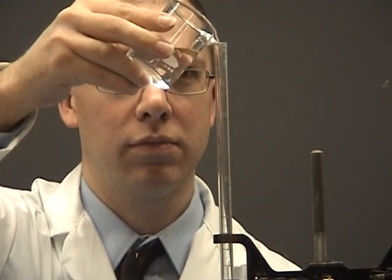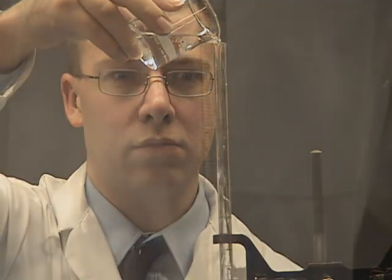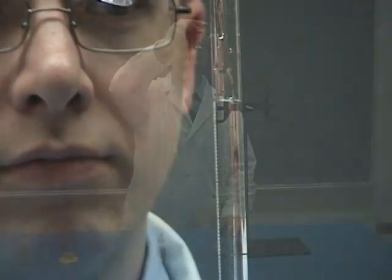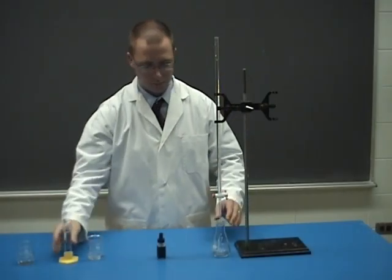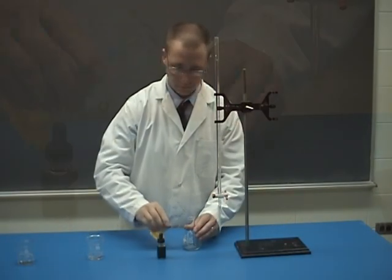Fill the burette with 25 milliliters of hydrochloric acid. Measure 25 milliliters of NaOH base in a graduated cylinder and transfer it to an Erlenmeyer flask.